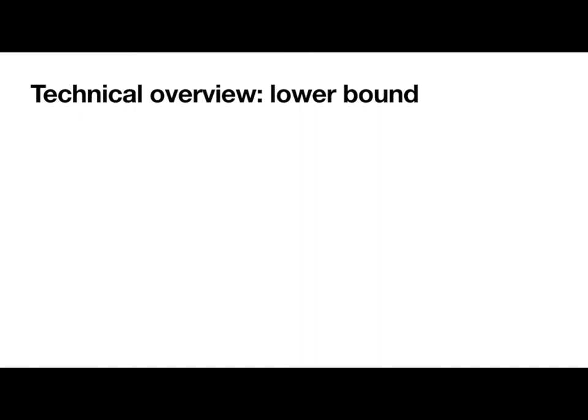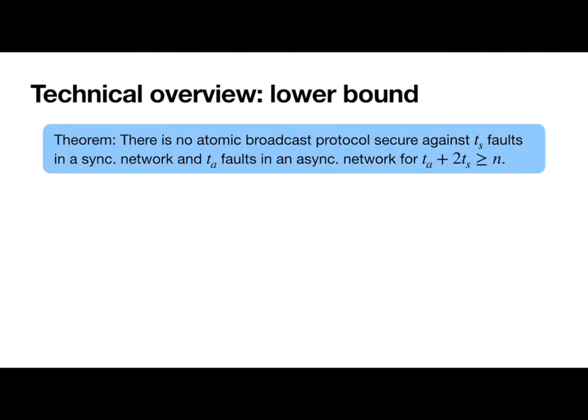Next, I'm going to give an overview of the lower bound, which states that there is no atomic broadcast protocol that is network agnostically secure, meaning secure against TS faults in a synchronous network and against TA faults in an asynchronous network, if TA plus 2 TS is greater than or equal to N.